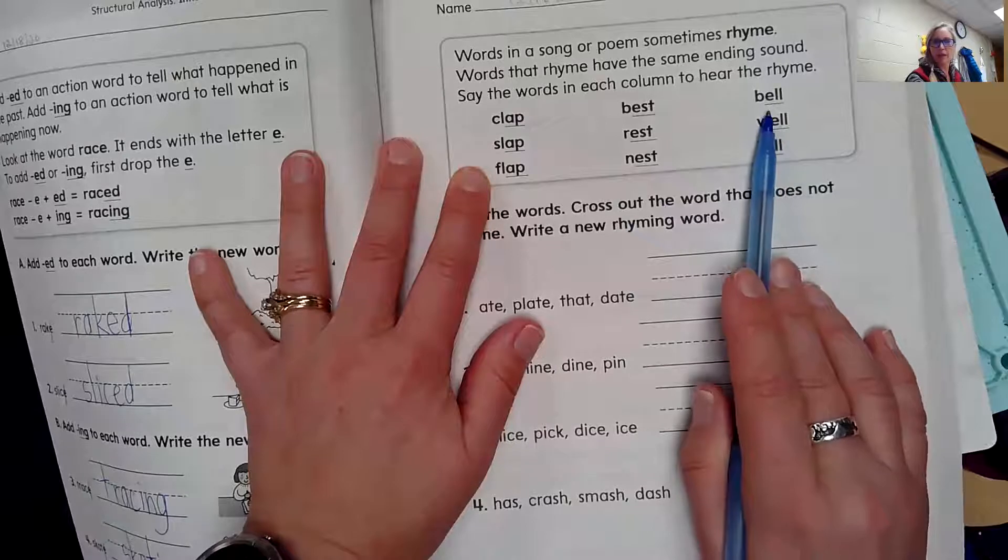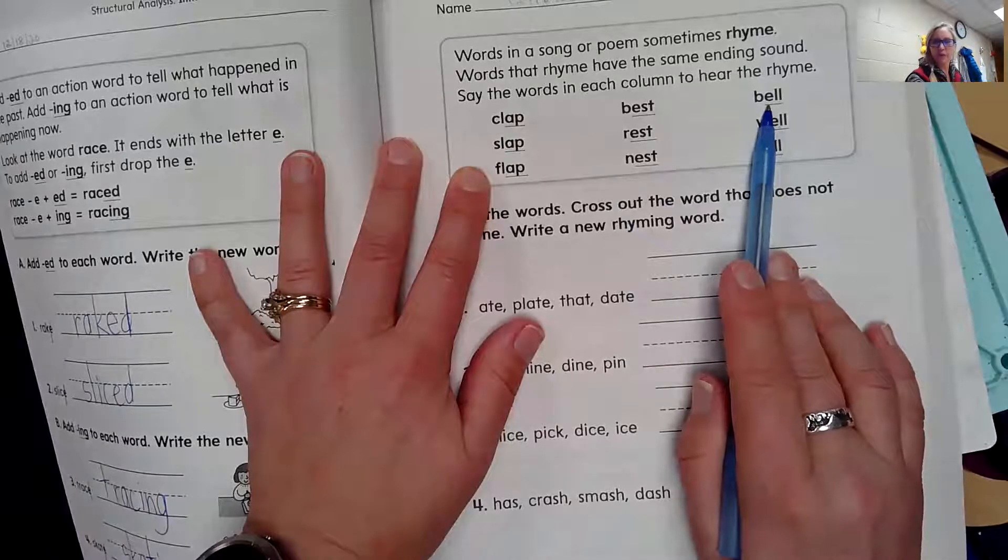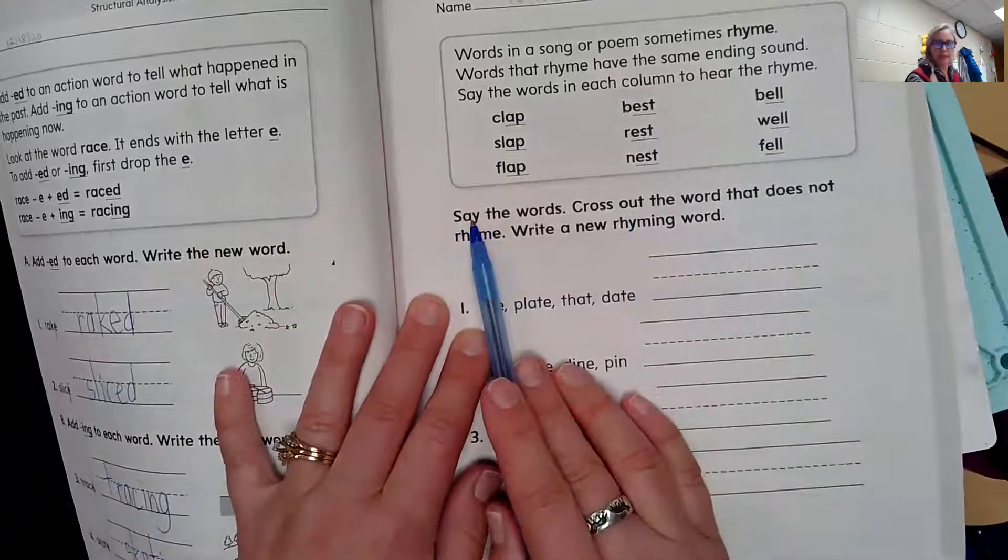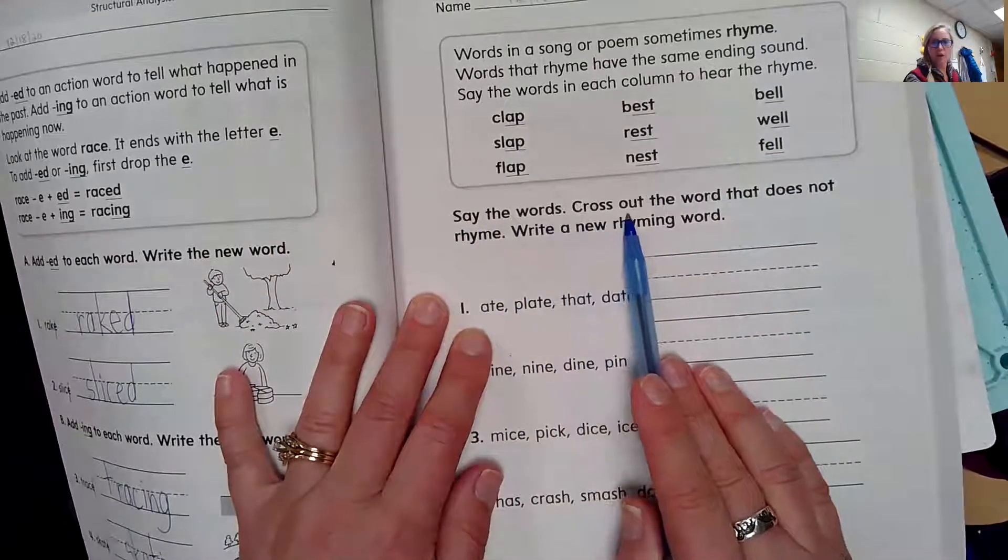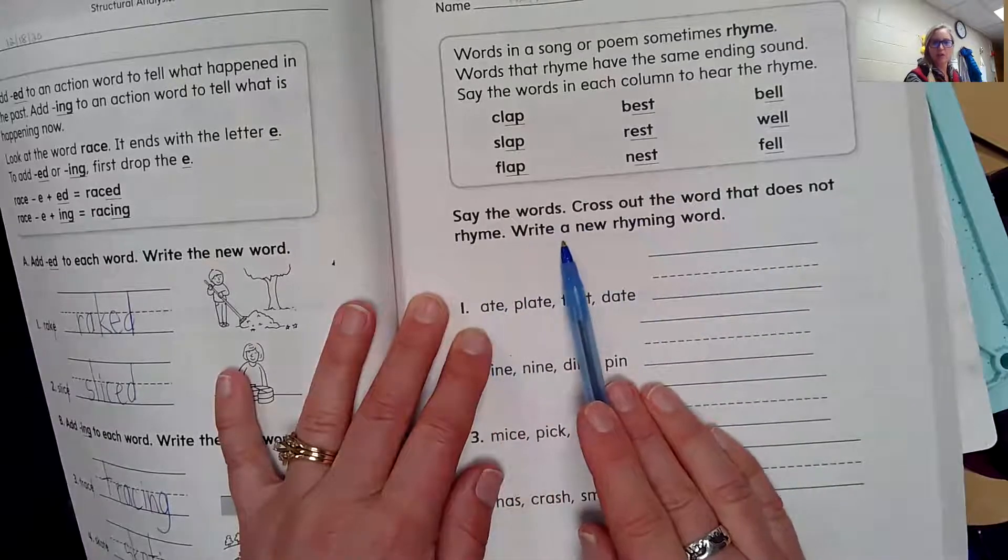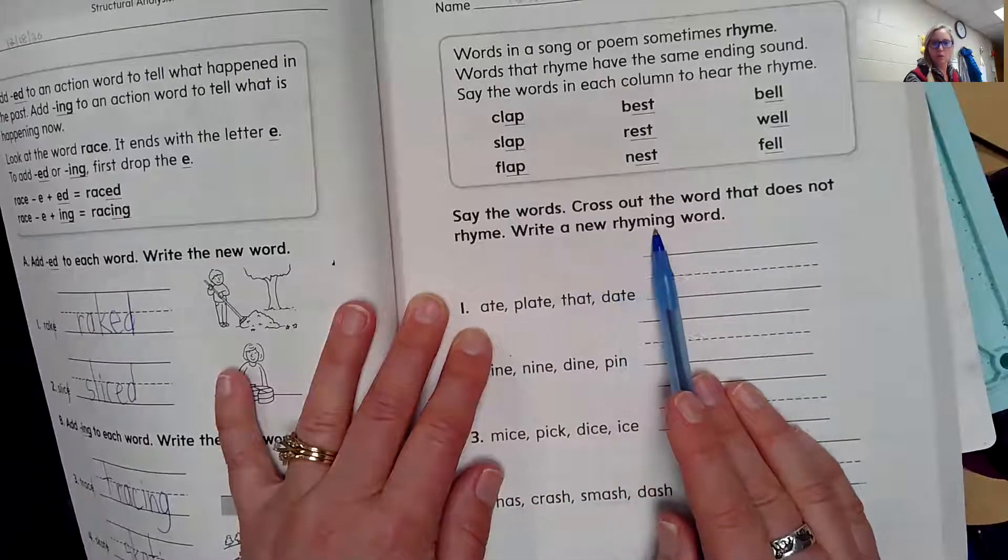So a word rhymes when you have the same vowel sound and ending sound. Let's look down here. Say the words. Cross out the word that does not rhyme. Write a new rhyming word.